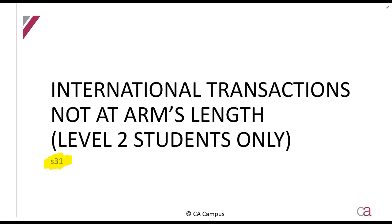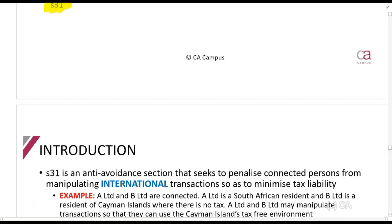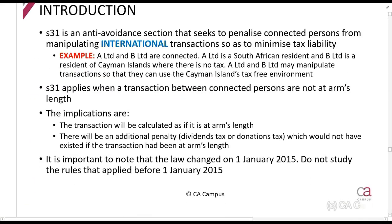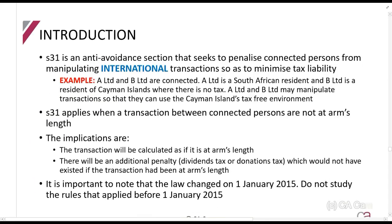What we're going to be looking at here is international transactions which are not at arm's length. Section 31 is an anti-avoidance section — a section that stops you from avoiding tax. It seeks to penalize connected persons from manipulating international transactions to minimize their tax liabilities.